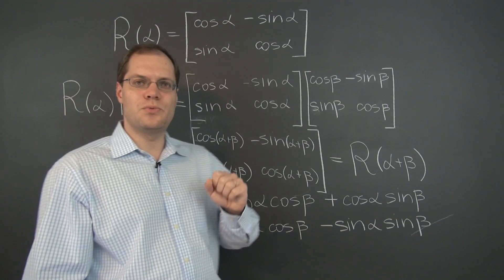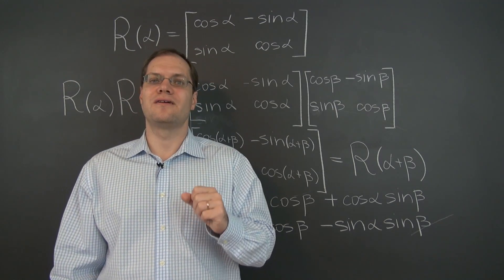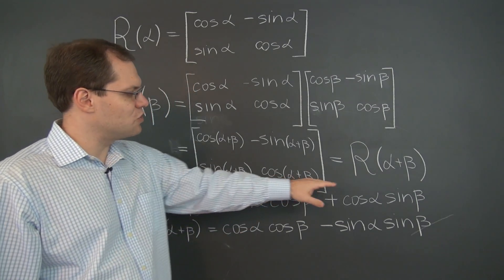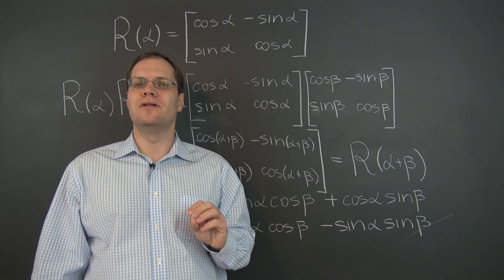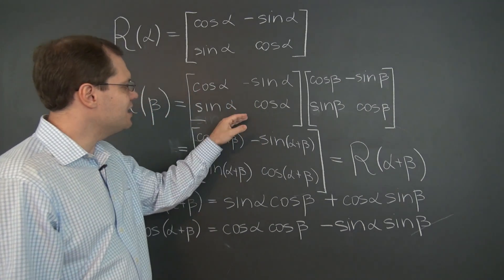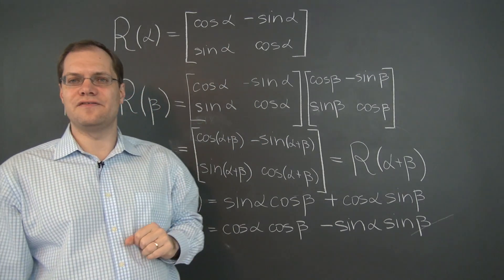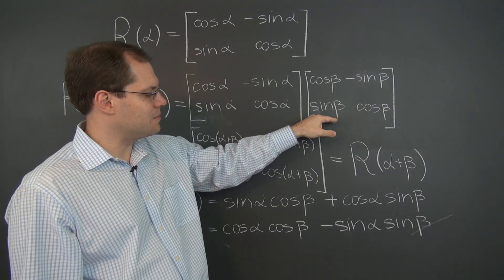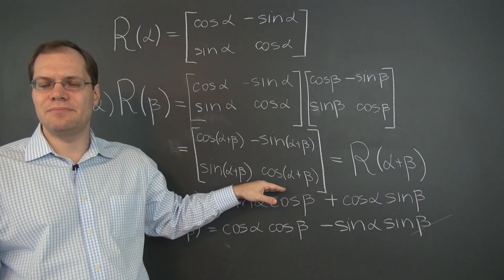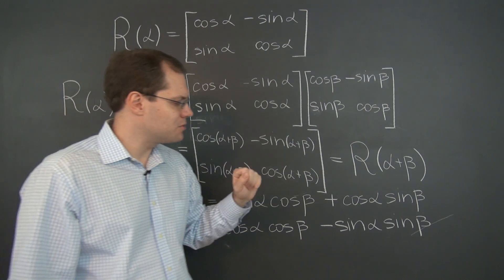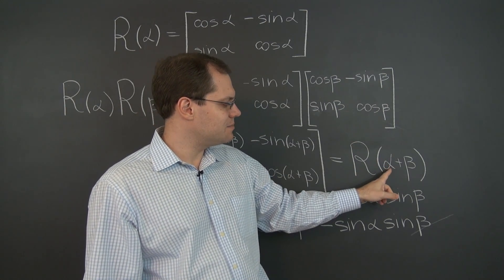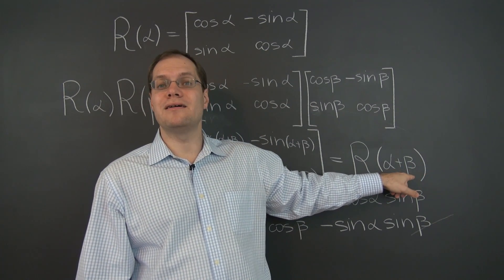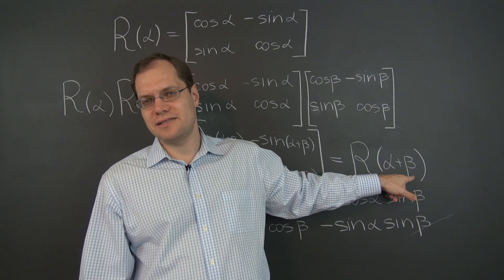All right, so that's one observation. And that's pretty good. We could have ended right here. But we can get so much out of this formula. For example, we can determine the inverse of R of alpha. So what matrix would you need to multiply by to get the identity matrix? And remember, we discovered that the identity matrix results when R is applied to zero. So beta needs to be chosen to be minus alpha.